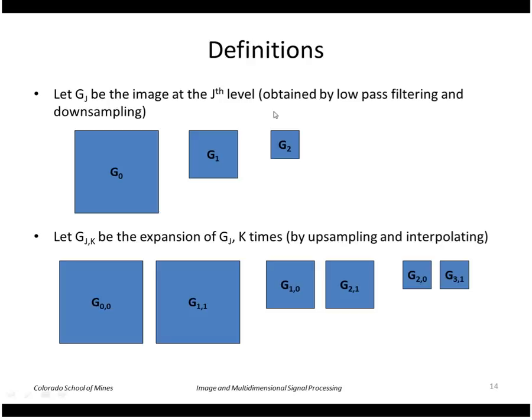Just some definitions here. Let's let G sub J be the image at the Jth level. So G0 is the original image. G1 has been subsampled once. G2 subsampled again and so forth.